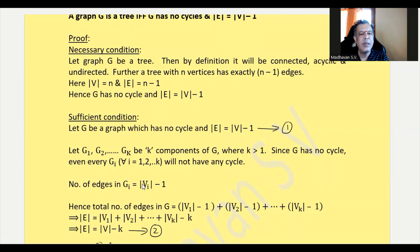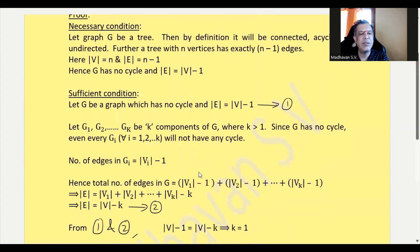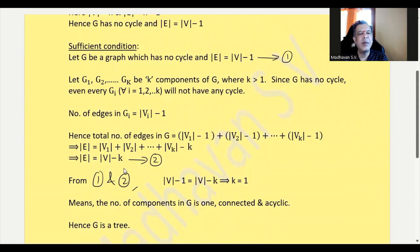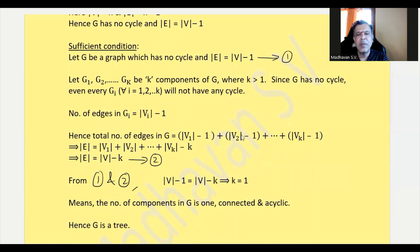So the number of edges in each component will be the number of vertices in that component minus 1. The total number of edges in G will become (|V1| - 1) + (|V2| - 1) + ... + (|Vk| - 1), which sums to |V1| + |V2| + ... + |Vk| minus k.